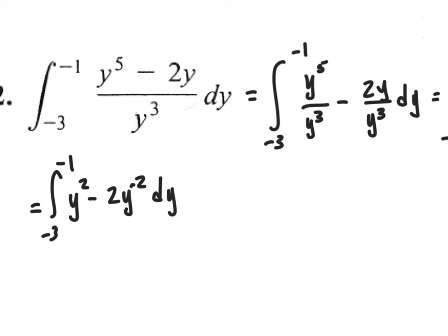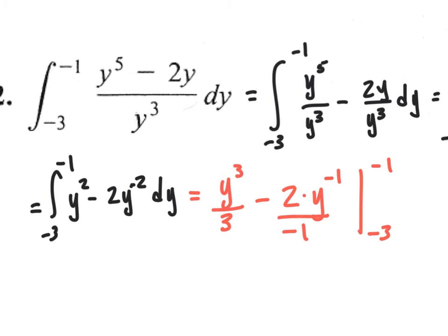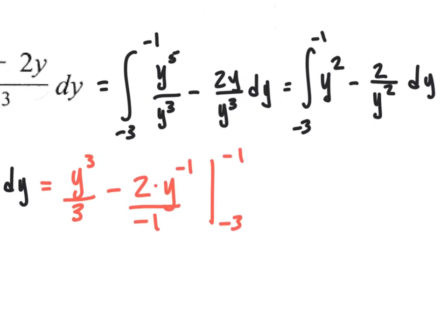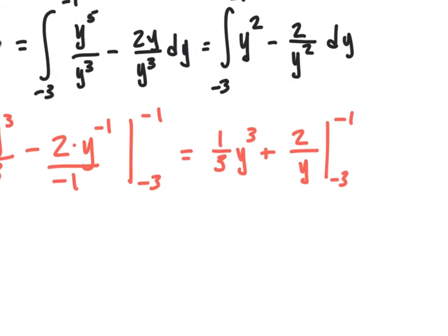This may be heavy on fractions, so bear with me. Taking the antiderivative: y cubed divided by 3 — increase the exponent by one and divide by the new exponent — minus 2 times y to the negative one divided by negative one, evaluated at negative 3 and negative 1. Rewriting, that's one-third y cubed plus 2 over y, evaluated at negative 3 and negative 1.